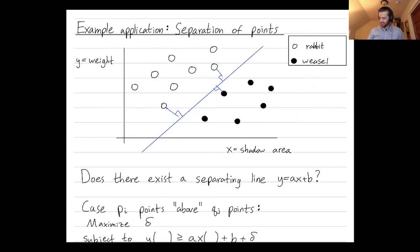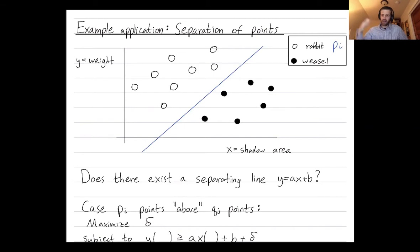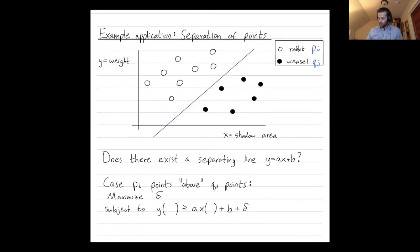We're just trying to decide, are the points linearly separable or not? And if so, we'll find the line that has the largest vertical gap separating the animals. We'll call the rabbit points the PI points, where I varies from one to the number of rabbits. And the weasel points will be the QJ points, where J varies from one to the number of weasels. There are two cases to look at, and we'll write down one: the PI points are above the line and the QJ points are below the line.